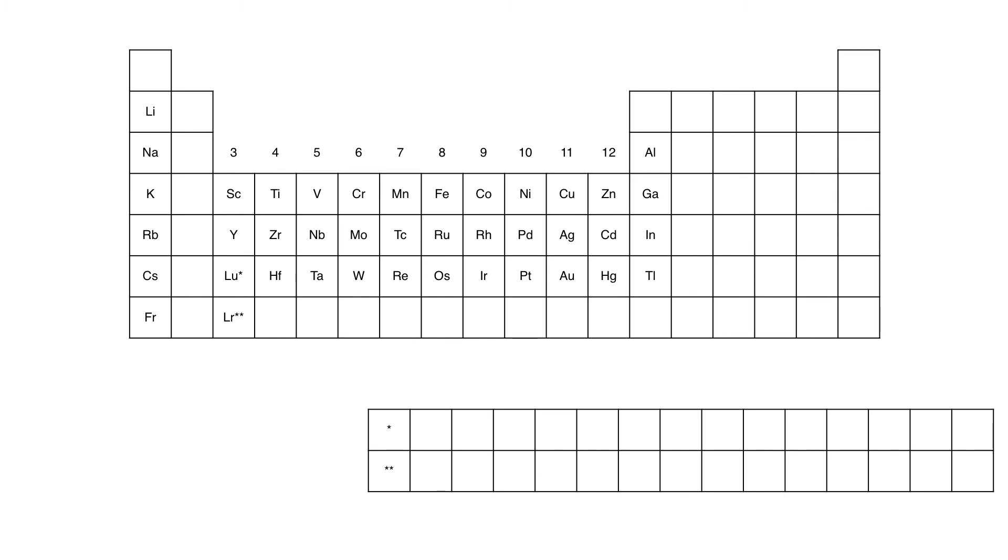Whilst any d-block element could be a transition metal, the ones we usually encounter are from groups 4 to 10, which go from early to late transition metals. The six transition metals near platinum are called the platinum group metals due to their similar behavior.